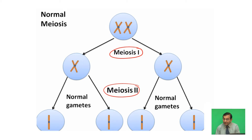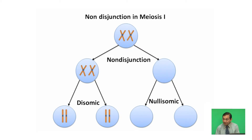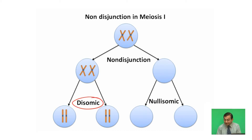On the other hand, if non-disjunction or non-separation occurs at the first meiotic division, then two disomic gametes and two nullisomic gametes will be formed. When a disomic gamete is fertilized by a normal gamete, trisomy will originate. This is the origin of trisomy resulting from non-disjunction at the first meiotic division.